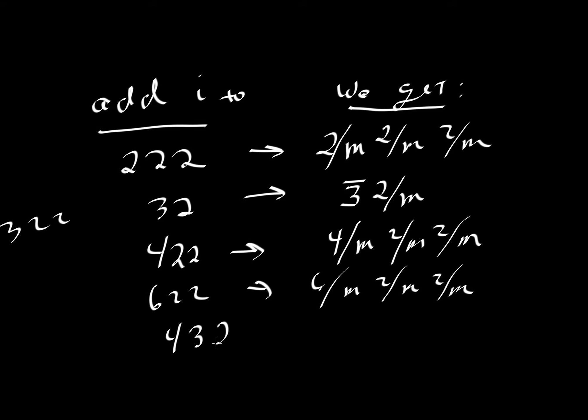For 4, 3, 2, you might want to pause the video here and try this yourself. What would 4, 3, 2 look like? That would be a mirror perpendicular to the 4. The 3 being odd would become a bar 3. And then the even-fold axis would have a mirror perpendicular, so we would write it as 2 over m.